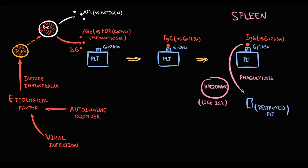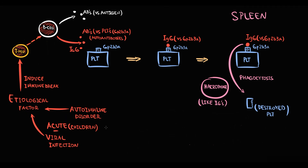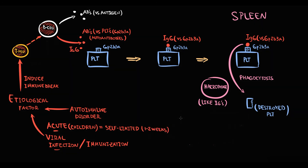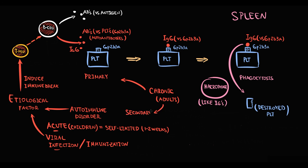There are two forms of immune thrombocytopenic purpura. The acute form classically arises in children, where the immune break is provoked by viral infection or immunization. Importantly, it is a self-limited disorder — platelet count normalizes within a week or two. The chronic form usually arises in adults and can be primary (unknown cause) or secondary, typically caused by autoimmune disorders such as systemic lupus erythematosus or chronic lymphocytic leukemia.